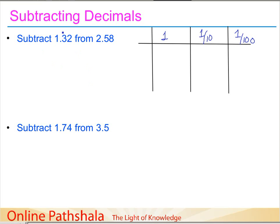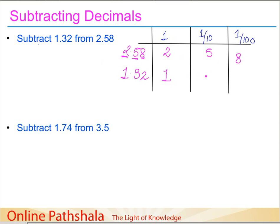This video covers how to subtract decimals. Let's take the first example: we have to subtract 1.32 from 2.58. We write 2.58 first — 2 comes in the ones place, 5 in the tenths place, and 8 in the hundredths place. The next number is 1.32 — 1 in the ones place, 3 in the tenths place.